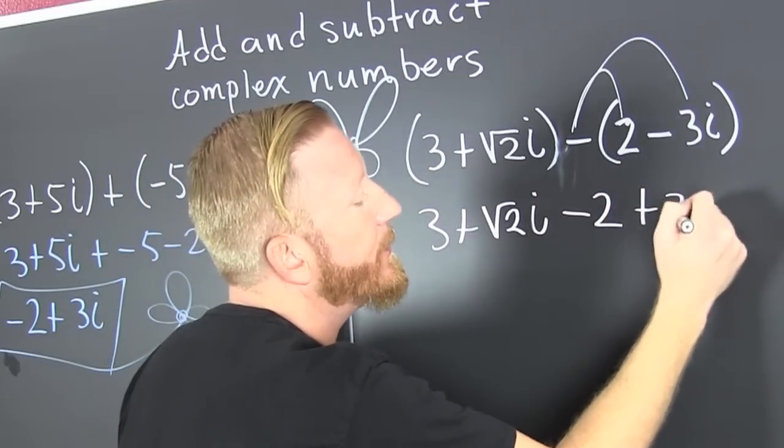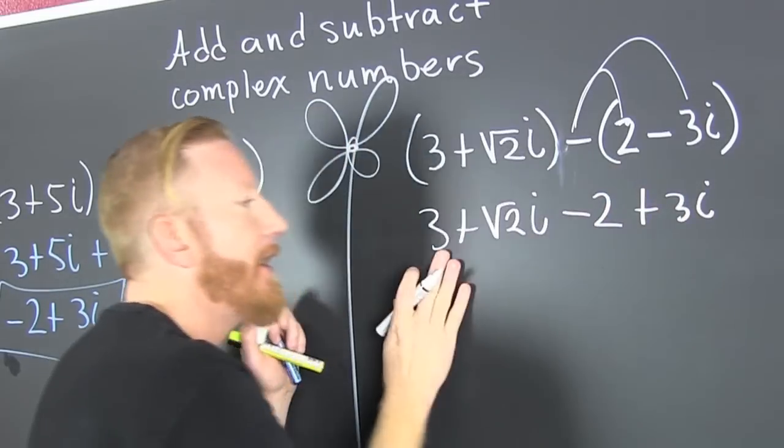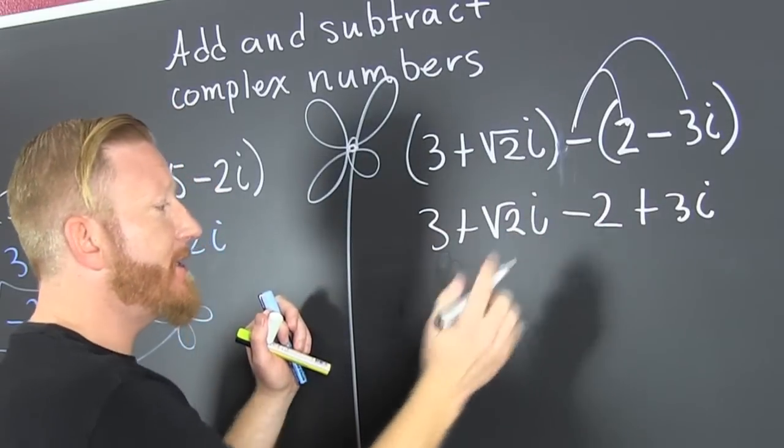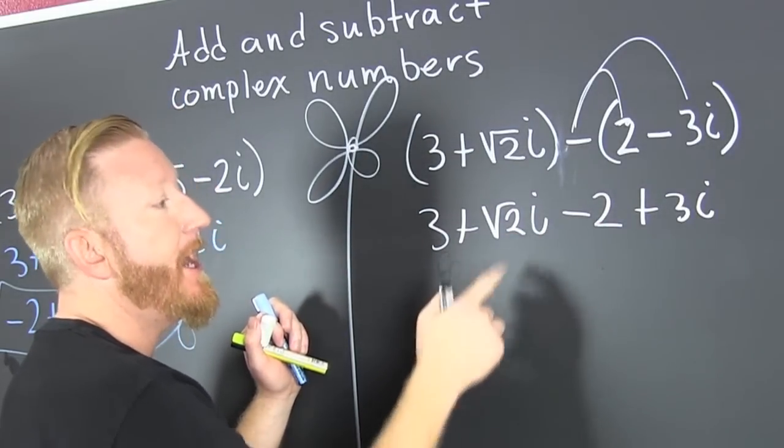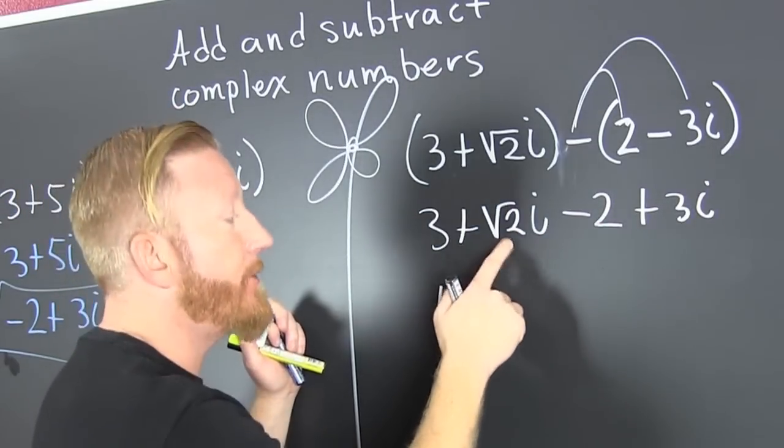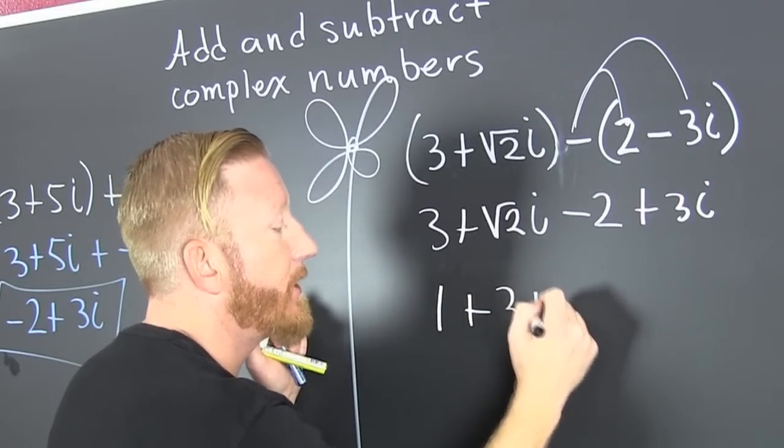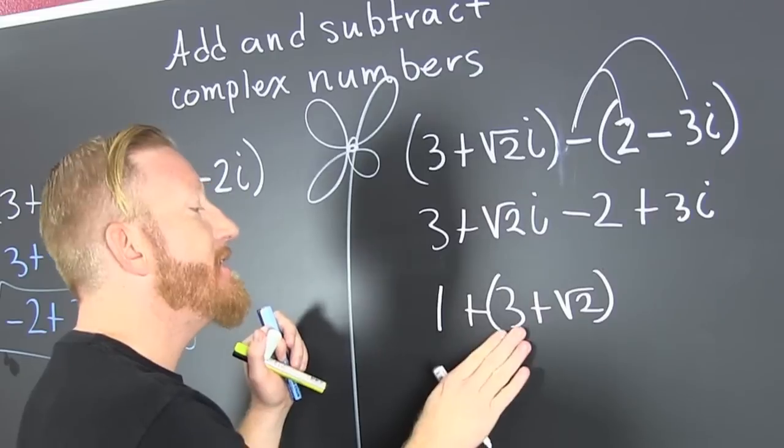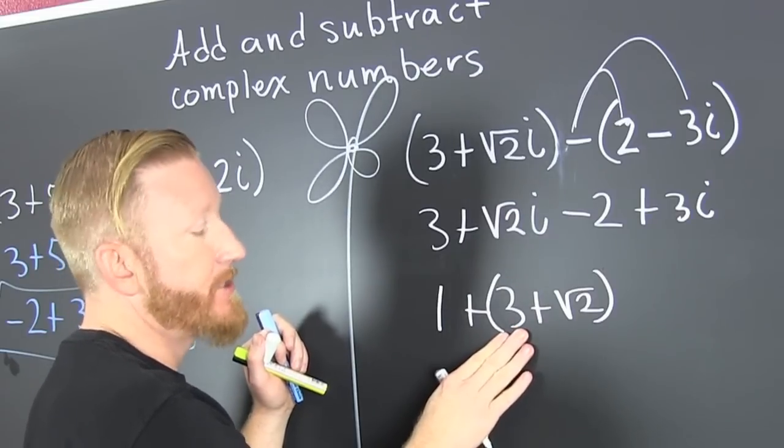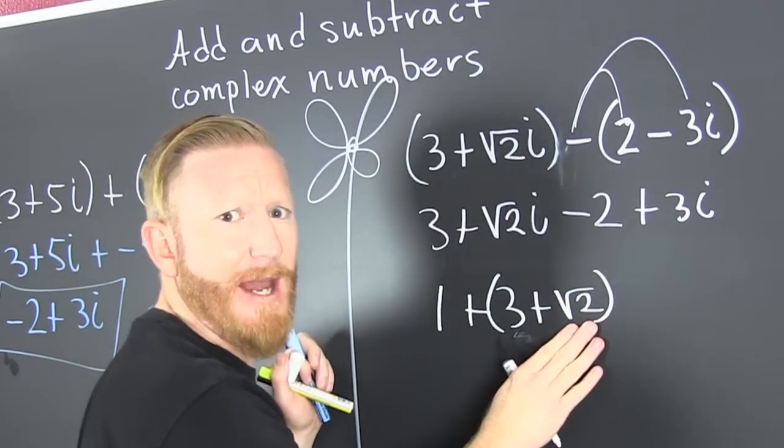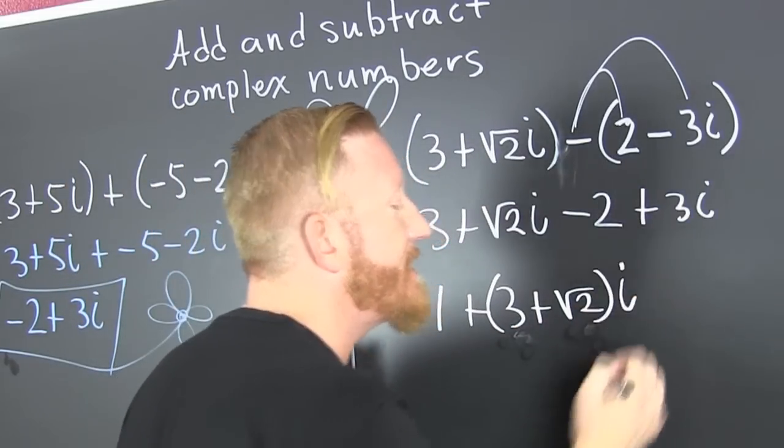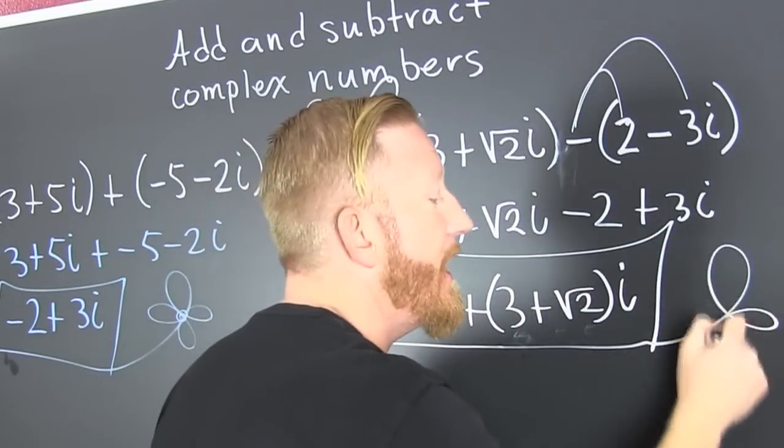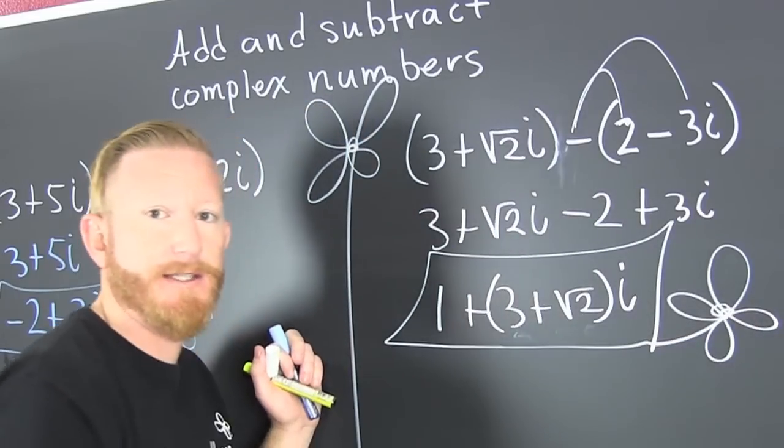I go and I add the real parts, three and the two, get me one. And then the imaginary parts, that's plus three plus root two i. I can't add that one. This is rational and that one's irrational, but they still have the designation for the i. And then you've just gone and you've added and subtracted complex numbers.